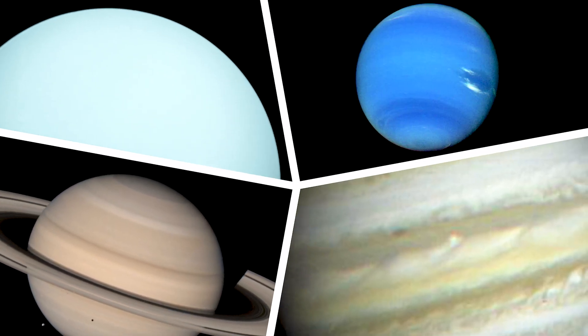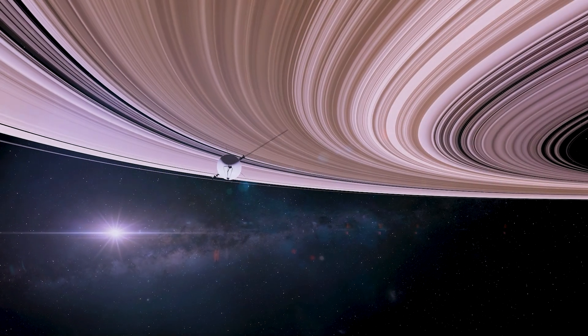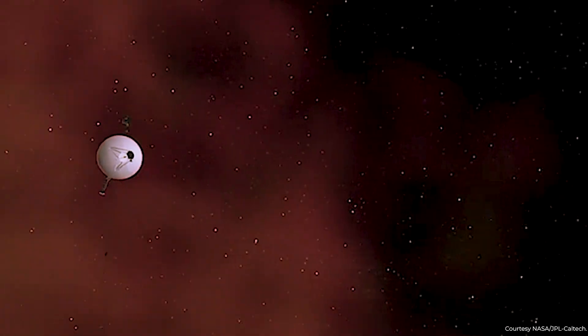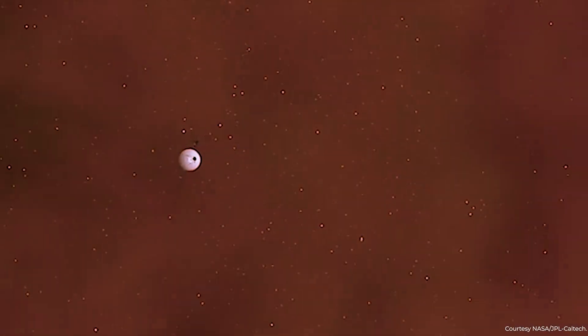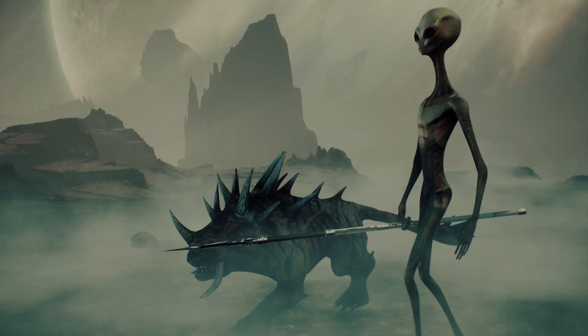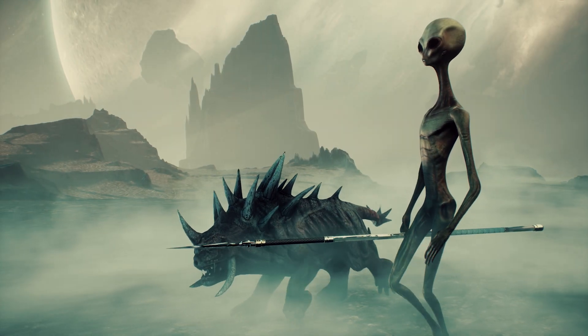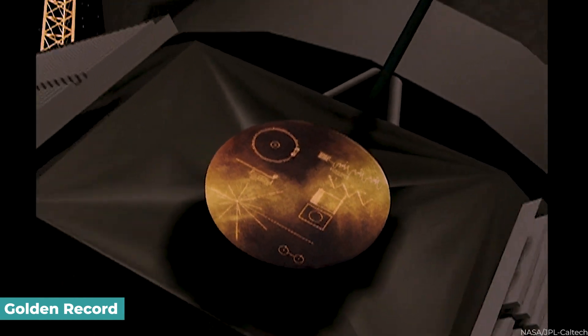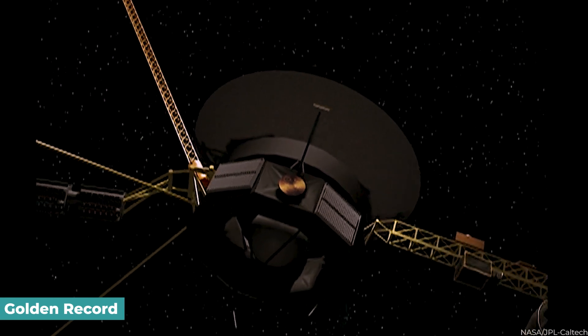Their adventure, however, continued. After completing their initial mission, the Voyagers continued their journey into interstellar space, becoming the furthest distant human-made objects from Earth. As a time capsule for any prospective alien civilizations, this awesome spaceship carried a golden record with sounds and pictures depicting humanity.